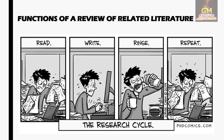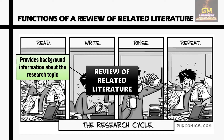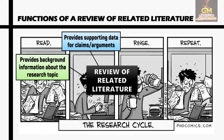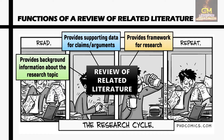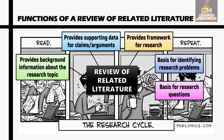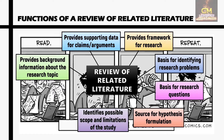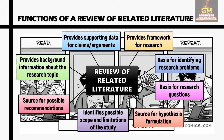In terms of functions, the review of related literature has multiple functions. The first one is that it provides background information about the research topic. Second, it provides supporting data for claims and arguments. Third, it provides a framework for the research. Fourth, it could also be a basis for identifying research problems. Furthermore, it can be used as a basis for research questions and a source for hypothesis formulation. Another function is that it identifies the possible scope and limitations of the study. And lastly, it can be a source for possible recommendations near the end of the study itself.